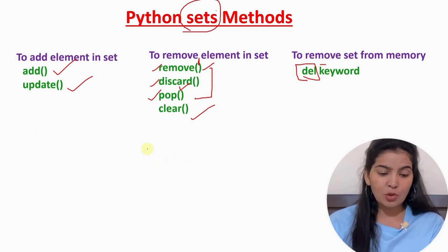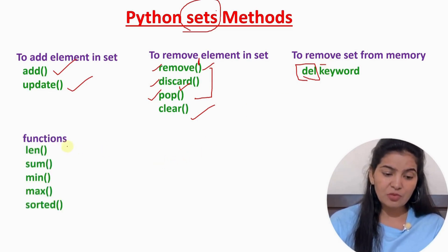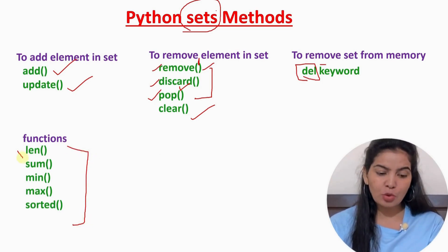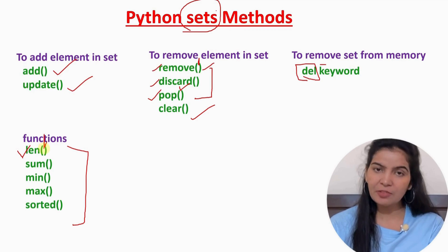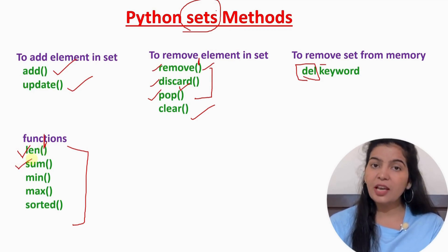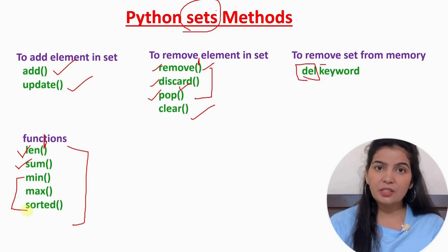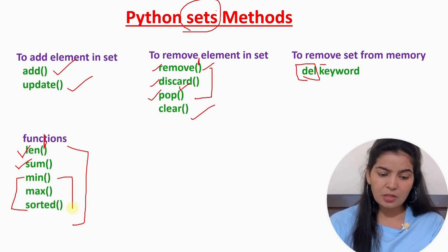Now let's see some functions that we can use with sets. We have used these functions with tuples and lists too. The length function is used to know the length of the object, so if we pass a set here it will give the length of the set. We can use the sum function if all the elements of the set are numeric — then it will give the sum of all the elements. And min, max, and sorted are used if all the elements of the set are either strings or numeric.